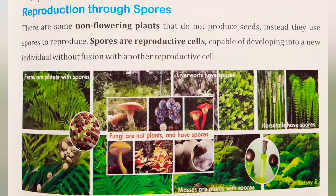There are many types of plants. The plants that reproduce by formation of spores are algae, fungi, mushrooms, liverworts, mosses, and ferns.